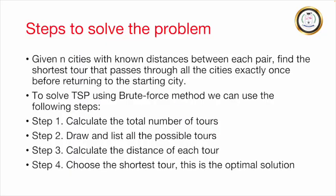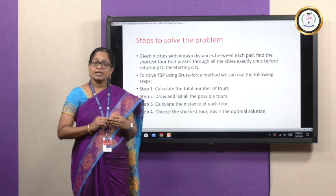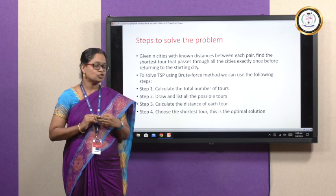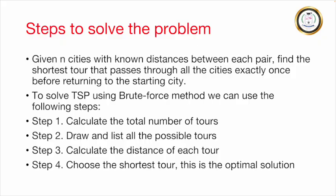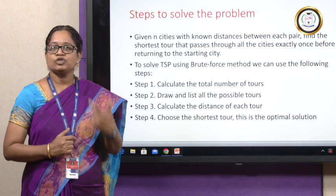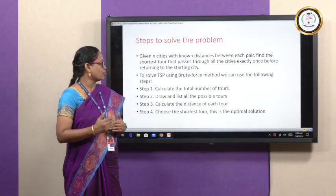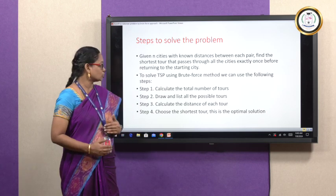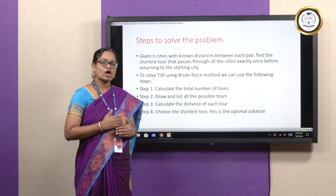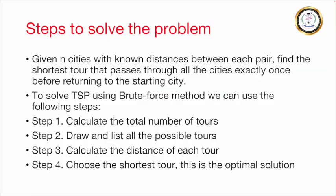The steps are: first, calculate the total number of tours; then draw and list all the possible tours; then calculate the distance of each tour; and finally, out of these tours, find the shortest tour, which will be the optimal solution.